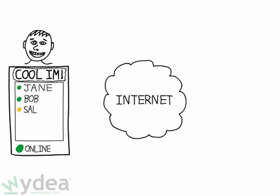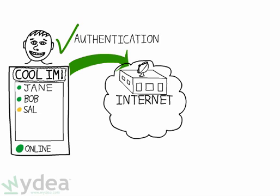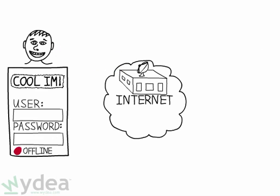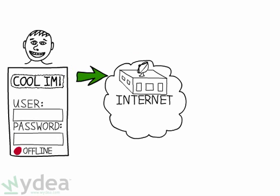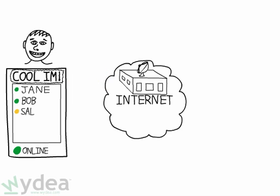Most IM programs connect to an IM company on the internet that both verifies a particular user's identity, called authentication, and sends information between users. When you start up an IM program, called an IM client, it first tries to contact a particular company's IM server. The IM server verifies your username and password and then logs you in. At this point, you're connected.